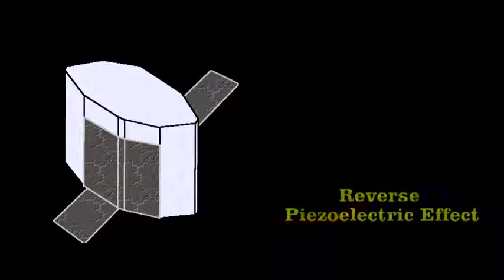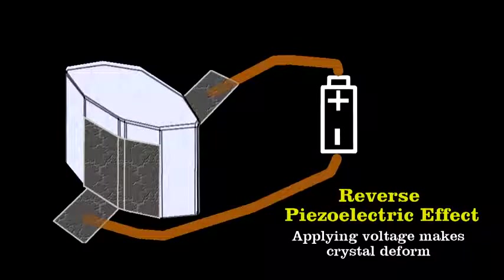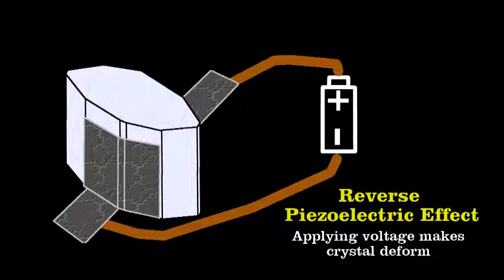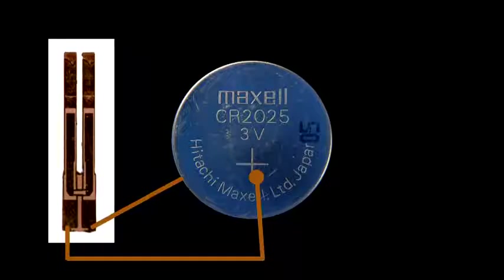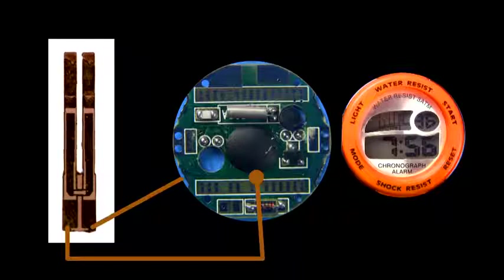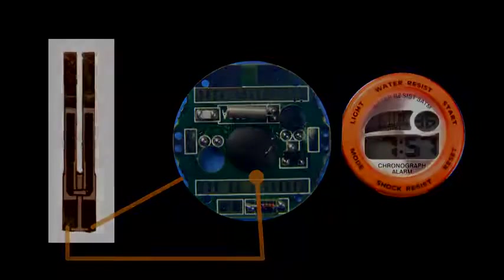The reverse also happens. If you place a voltage across the crystal, it deforms. This is how the quartz tuning fork in the watch is pinged. A voltage from the battery sets it in motion, and then the watch's circuitry measures the current fluctuations that represent the resonant motions of the tines.